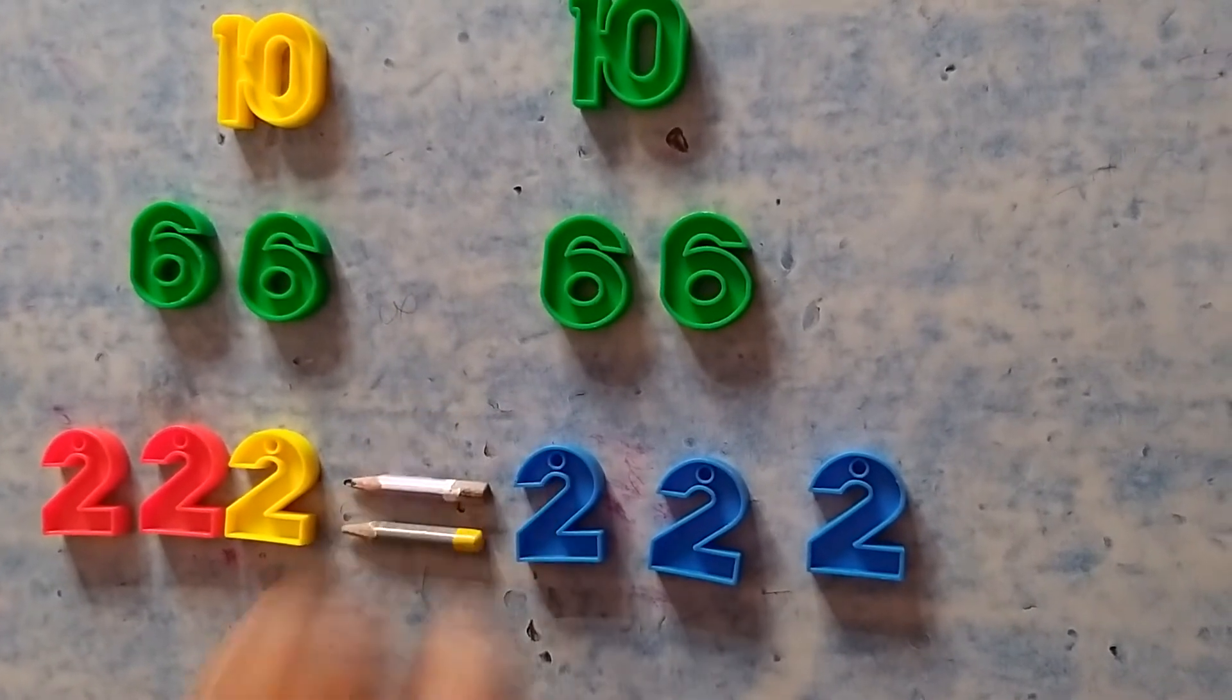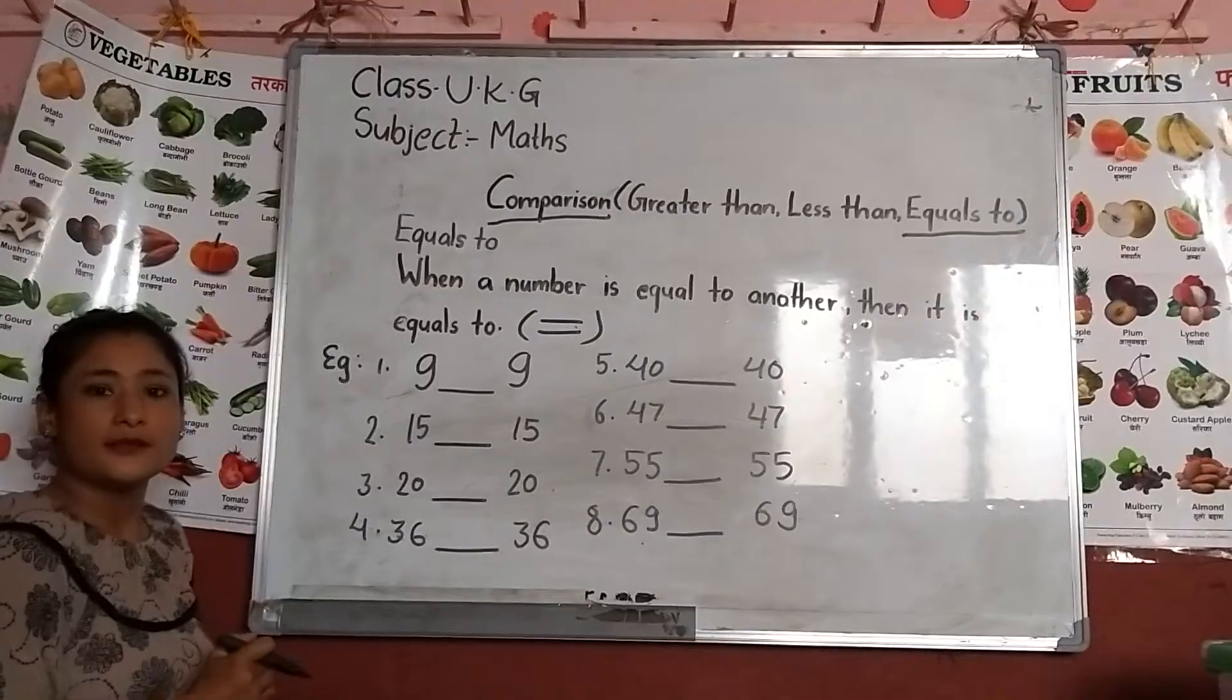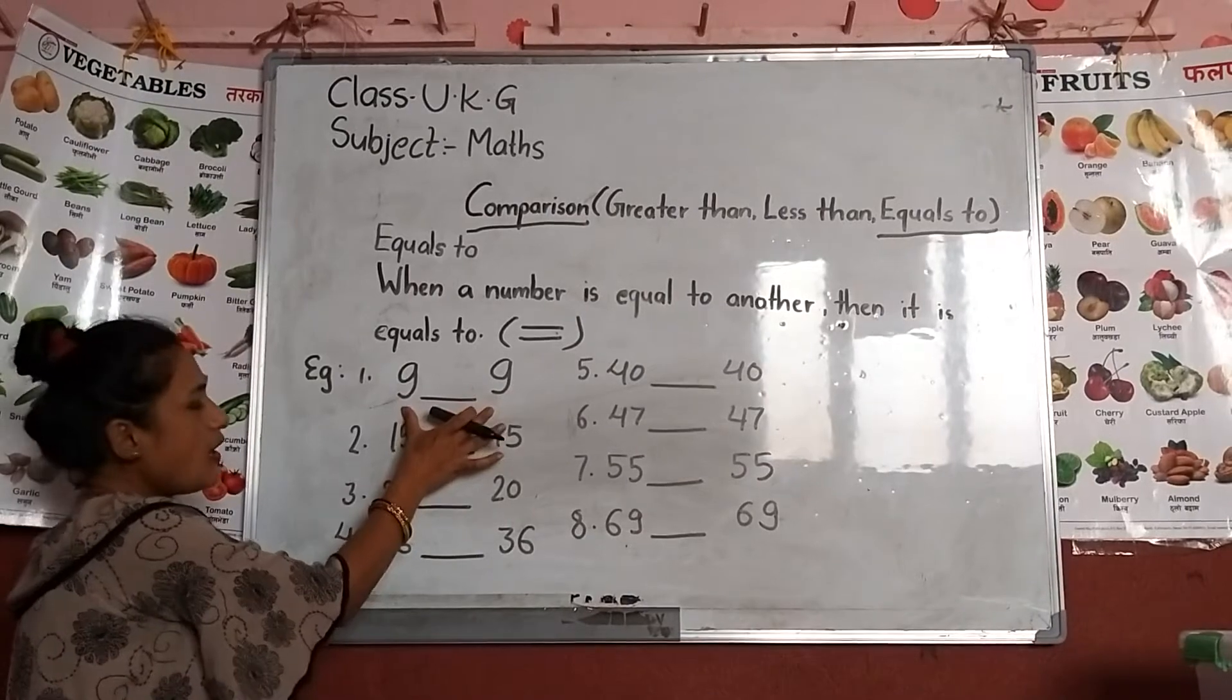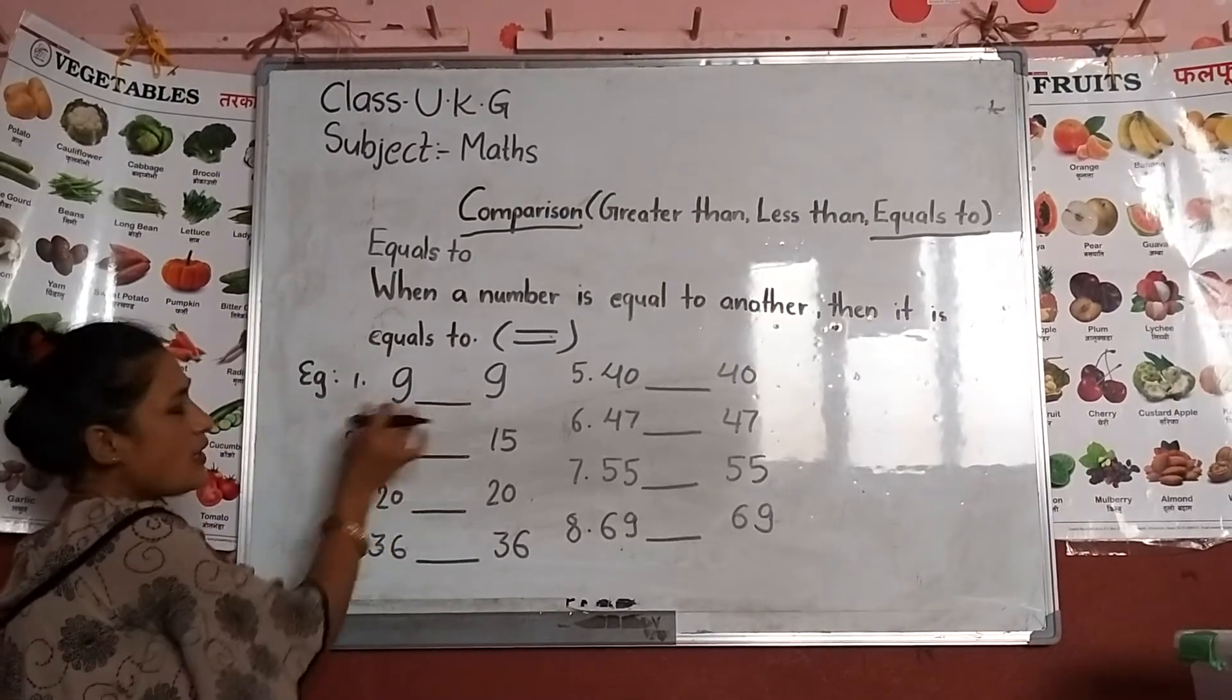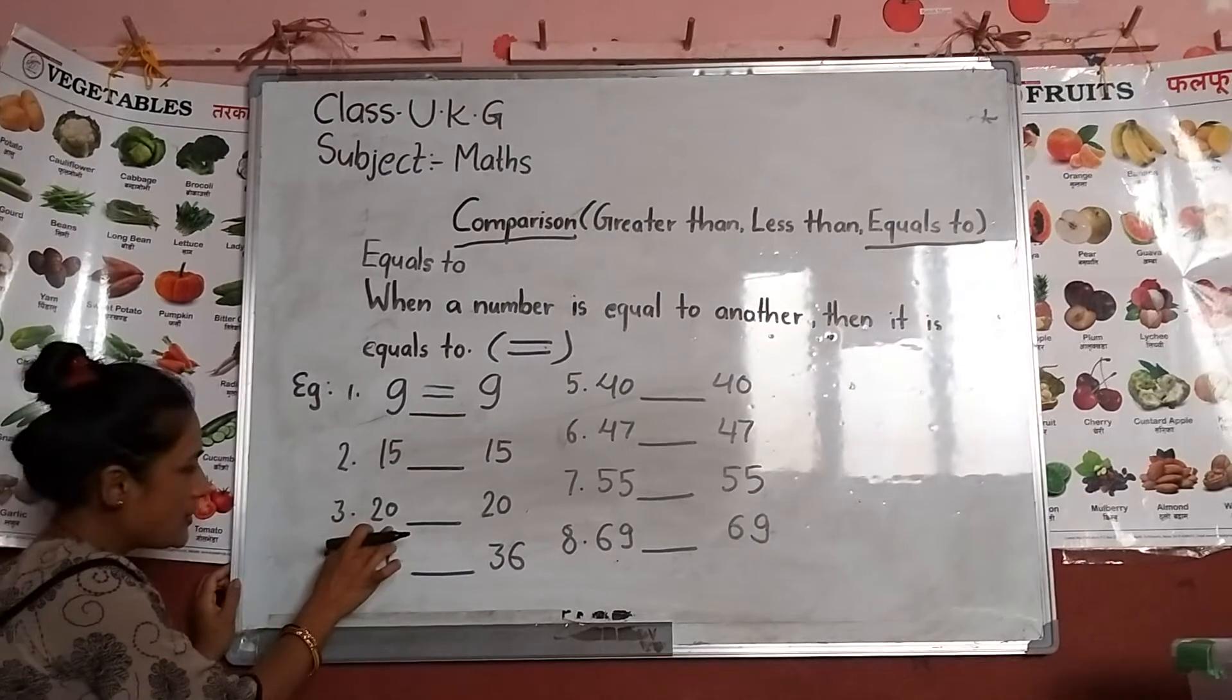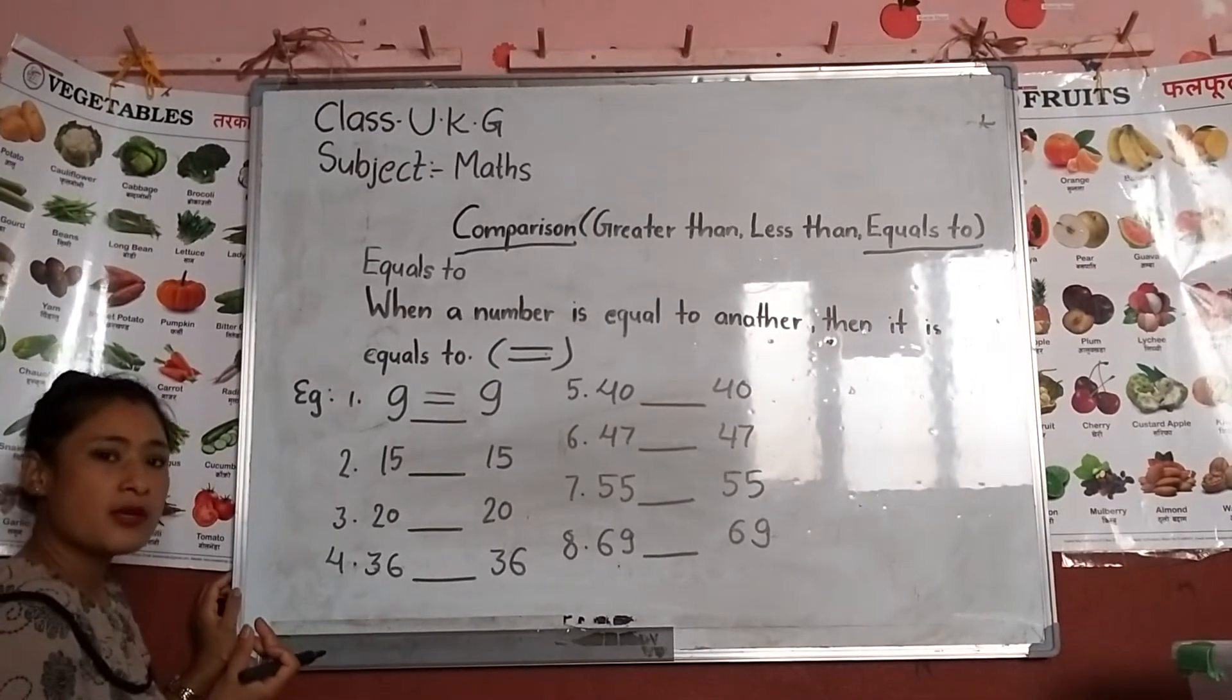This is one number and another number. The number for this is equals to.